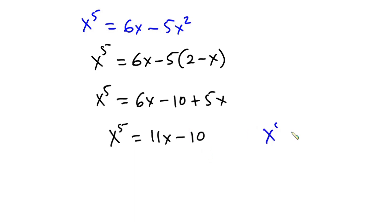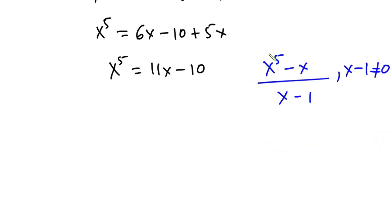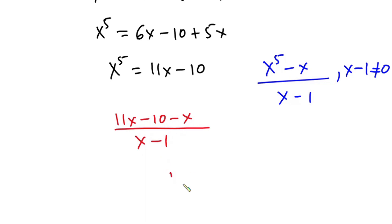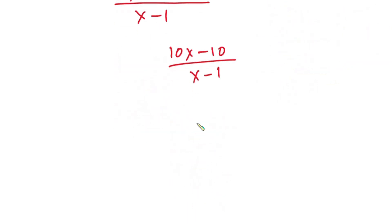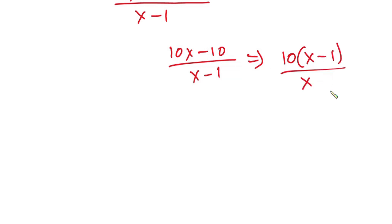From the problem we are looking for x to the fifth power minus x, over x minus 1, where x minus 1 is never equal to 0. Now we know x to the fifth power, so the fraction becomes 11x minus 10 minus x, divided by x minus 1. That gives 10x minus 10, divided by x minus 1. Factorizing the numerator: 10 times (x minus 1), divided by x minus 1. The (x minus 1) cancels, and we are left with 10. This is our final answer.